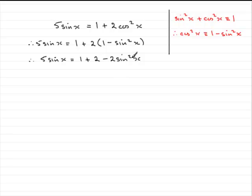We've got a quadratic equation in sine x, because we've got a sine squared x here. So we need to rearrange this, make this term positive. If we add 2 sine squared x to both sides, we've got 2 sine squared x. And then we've got 1 and 2, which is 3.